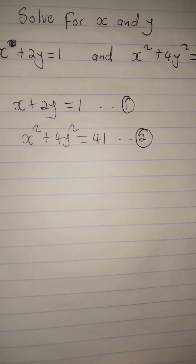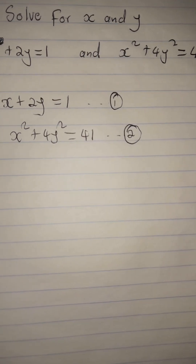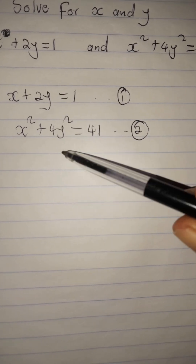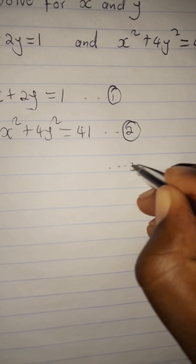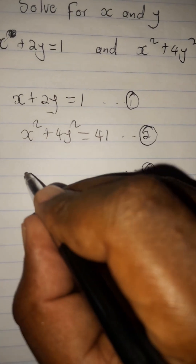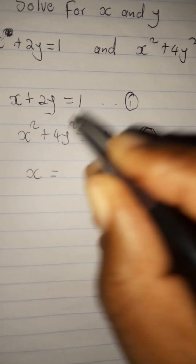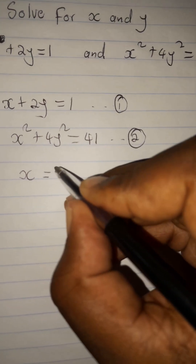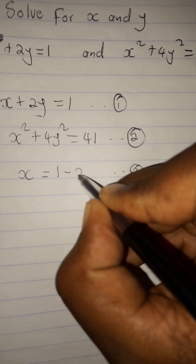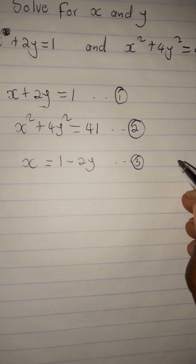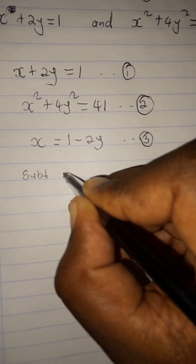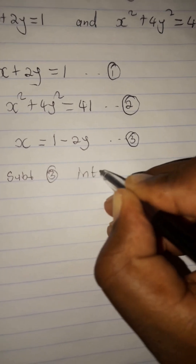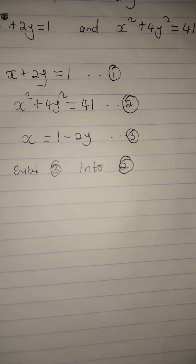So let's put this into practice. We will choose from equation 1 and 2 which one we want to make equation 3. We'll choose the linear equation and make x the subject. When we take 2y to the right-hand side, it will be 1 minus 2y. So equation 3 is: x equals 1 minus 2y. Now substitute equation 3 into equation 2 — not into equation 1, because we already turned it into equation 3.